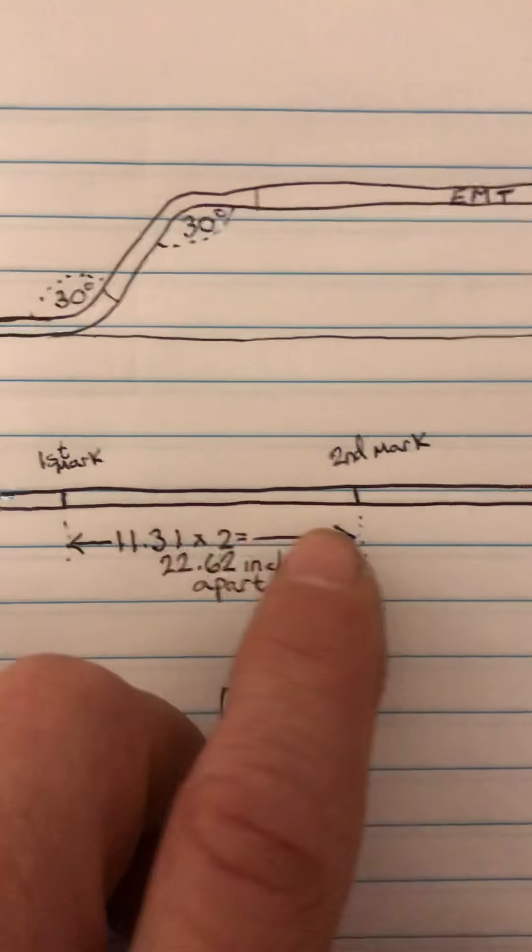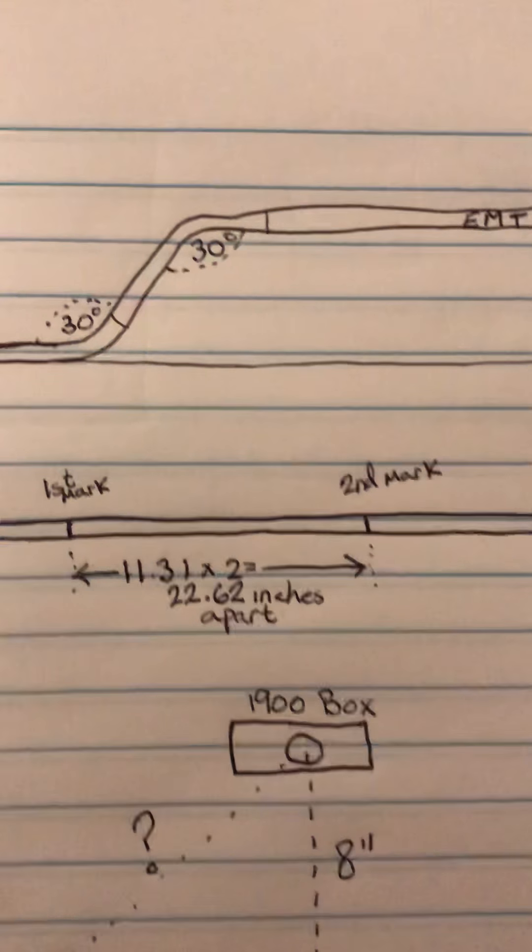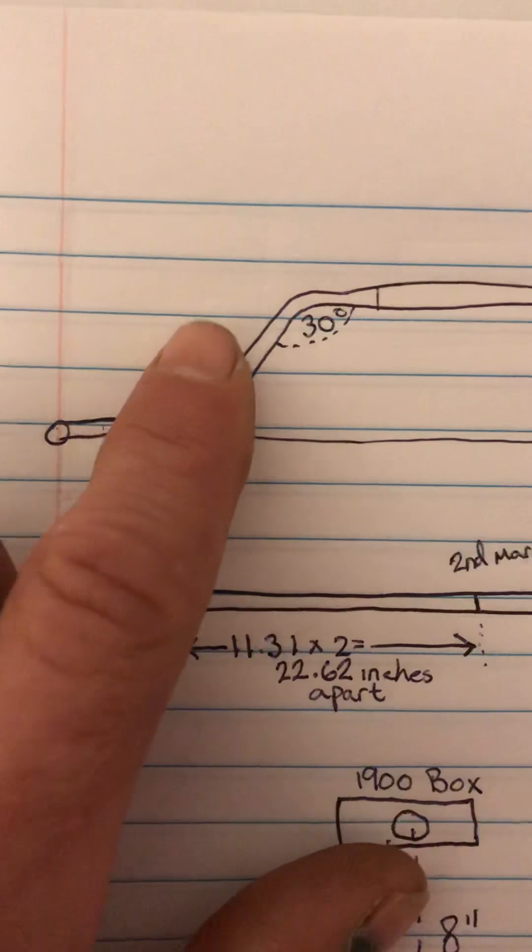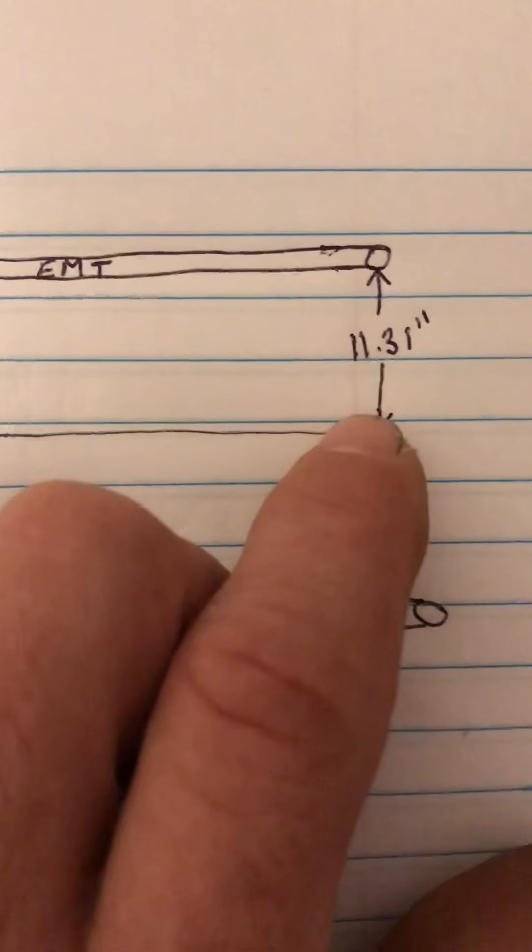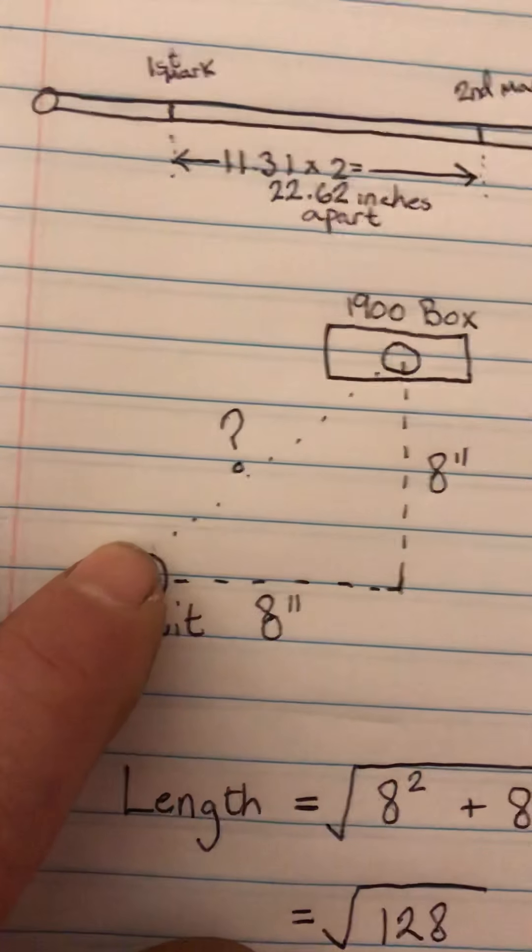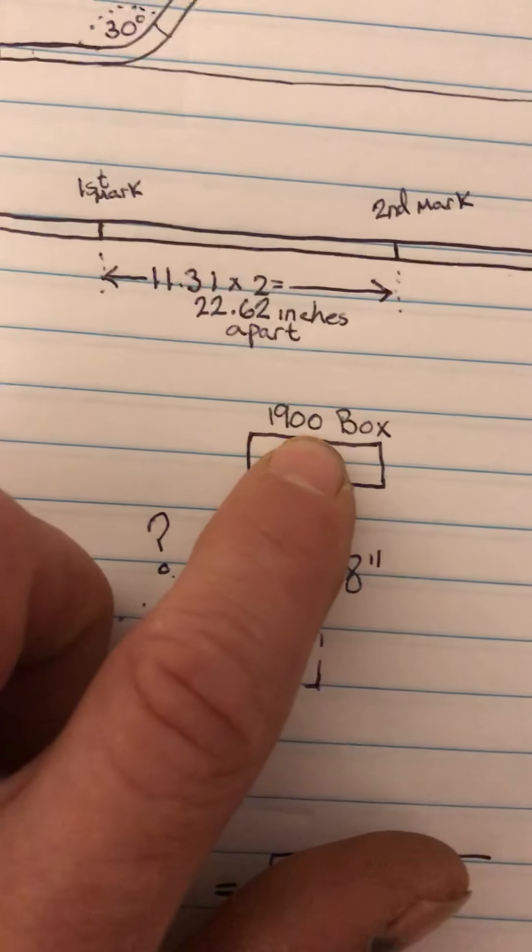The marks have to be 22.62 inches apart. Then once we bend it - our 30 degrees here and our 30 degrees here - we will come up with the 11.31 inches that we need to get this conduit from where it's at now to that 1900 box opening.